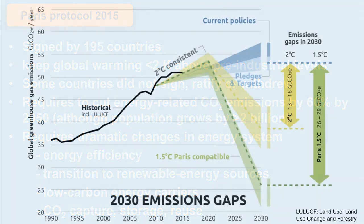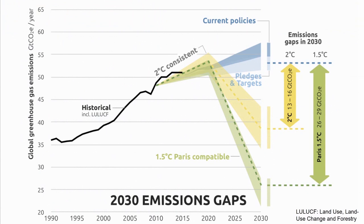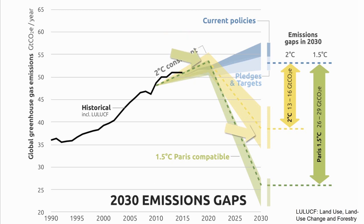This diagram reveals how drastic the changes have to be to reach the goals of the Paris Protocol. For reaching the two-degree limit, emissions of CO₂ must be reduced by 13 to 16 gigatons by the year 2030. For a goal of 1.5 degrees, reductions must amount to even 26 to 29 gigatons CO₂ by 2030.